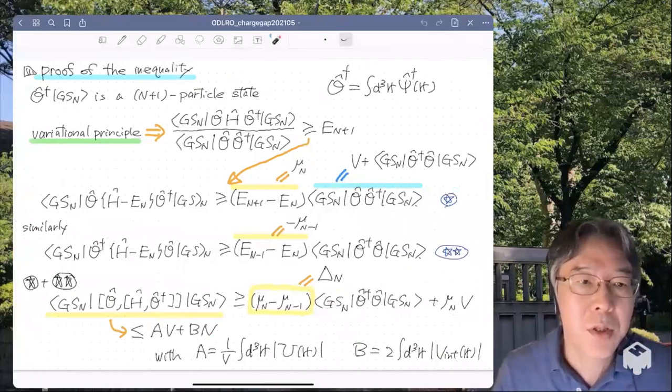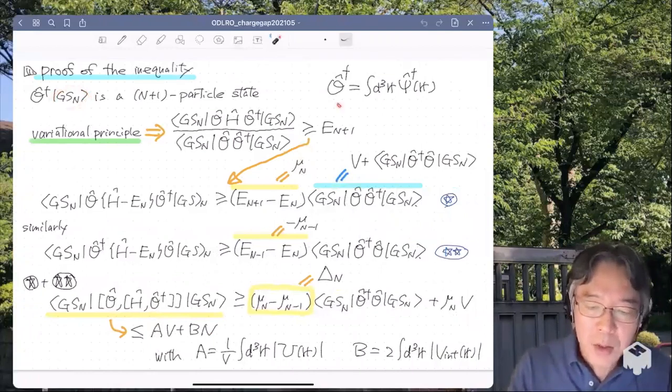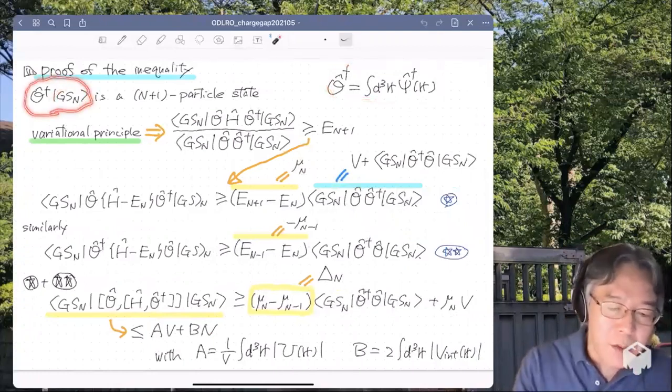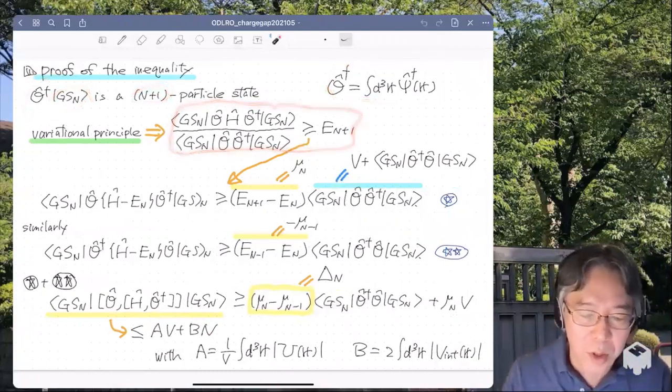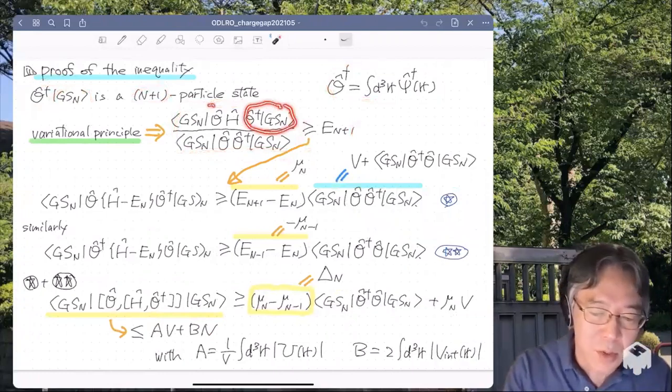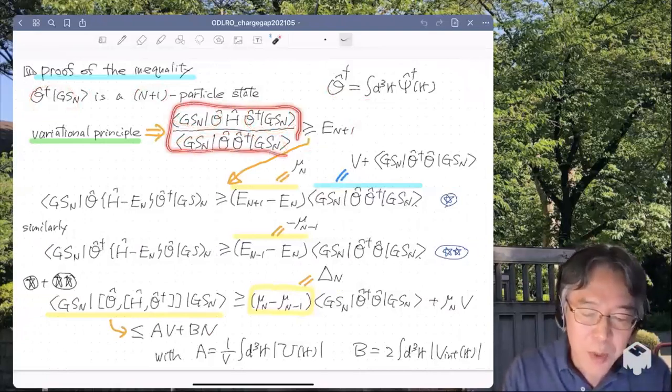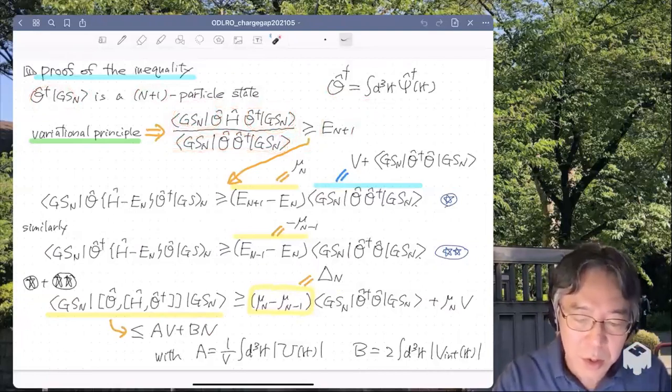Now I can derive the inequality. So recall that GS_N is the ground state with N particles. And O dagger contains a creation operator. So this state, O dagger GS_N, is a state with N plus 1 particles. Then from variational principle, we get this inequality here. Why? Well, the left-hand side, it's simply the energy expectation value in this state. The state is here. It's corresponding bra is here. And here's the normalization. And since this guy lives in N plus 1 particle state sector, so this energy expectation value can never exceed E_{N+1}, which is the ground state energy in the N plus 1 particle sector.